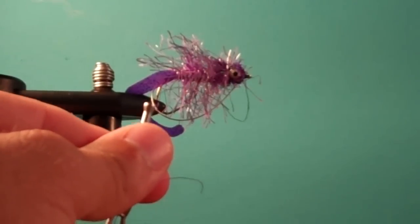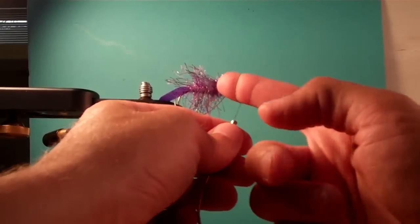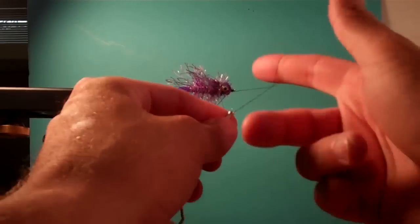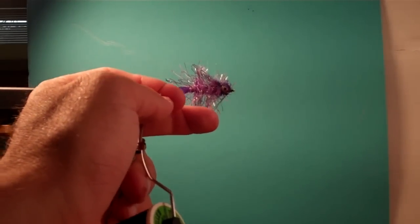A couple more wraps to cover down that little piece of metal. Now we're going to half hitch. Hold the bobbin in your left hand. Let's zoom out. Half hitch. Twist. Two, three. Slide over. Pull. One, two, three. And pull. And that is the curly tail fly.